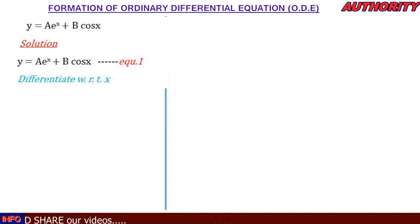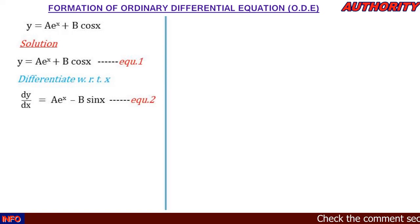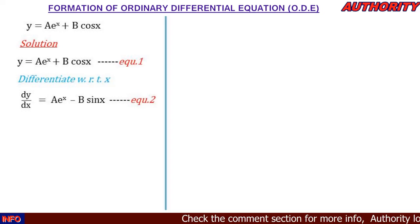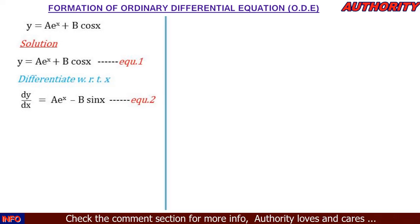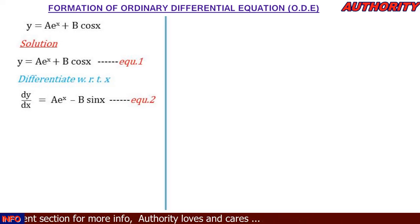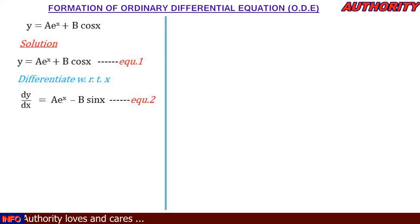The first thing we are going to do is differentiate this function with respect to x. When we differentiate ae^x it remains the same, giving ae^x, and when we differentiate b·cos(x) it gives minus b·sin(x). So after differentiating we have dy/dx = ae^x − b·sin(x). Let's call this equation 2.